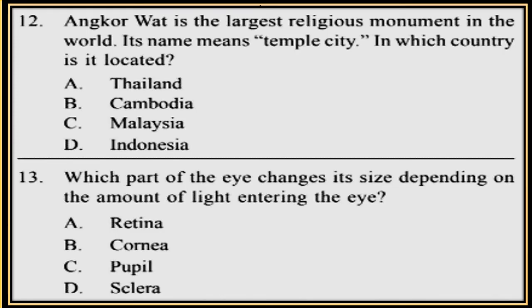Question 12. Angkor Wat is the largest religious monument in the world. Its name means 'temple city'. In which country is it located? A. Thailand, B. Cambodia, C. Malaysia, D. Indonesia.